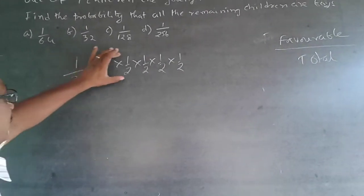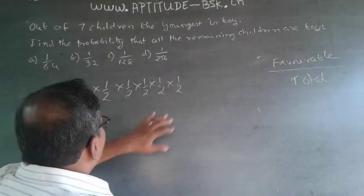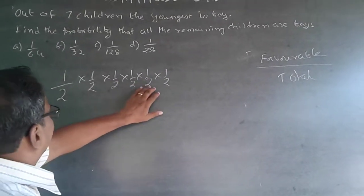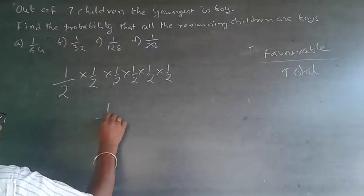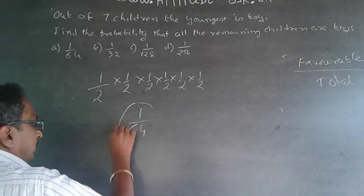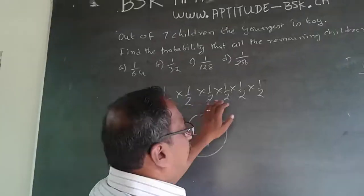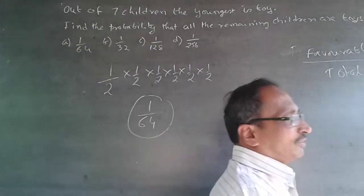It will be first boy, second boy, third boy, fourth boy, fifth boy, sixth boy. Nothing but 1 by 2 power 6. It is nothing but 1 by 2 power 6. 1 by 2 power 6 is 1 by 64. The answer is 1 by 64. 4 into 4 into 4 will be 1 by 64.